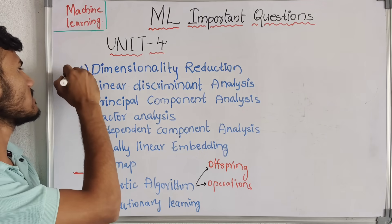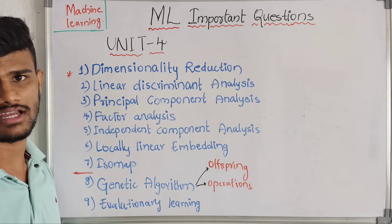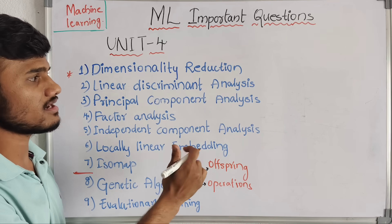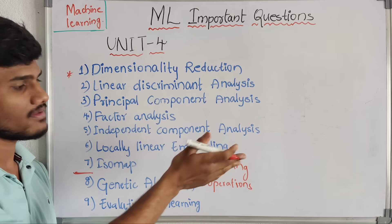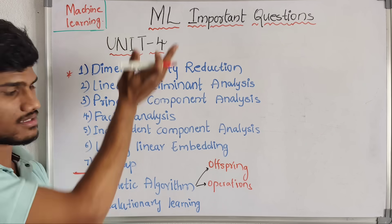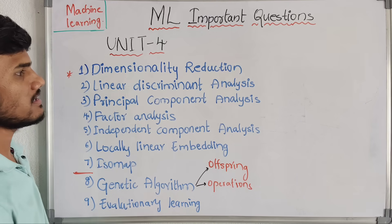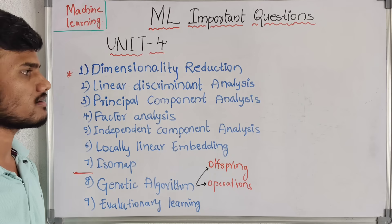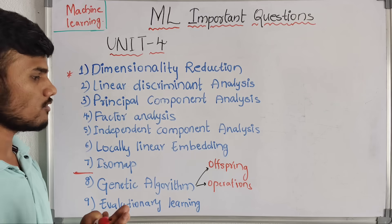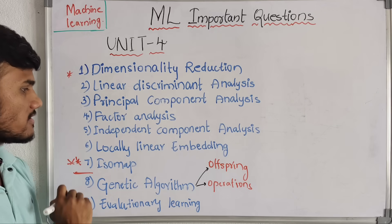Coming to our fourth unit. In this fourth unit, we have Dimensionality Reduction as the first question. We have two parts: the analysis part and the genetic algorithm part. In the analysis part, we have Linear Discriminant Analysis, Principal Component Analysis, Factor Analysis, Independent Component Analysis, Local Linear Embedding, and Isomap. The Isomap question is important. If you choose the genetic algorithm, the genetic algorithm involves the offspring and three main types of operations.